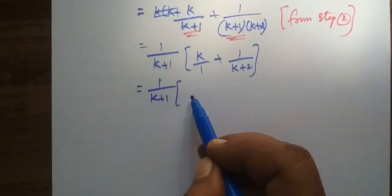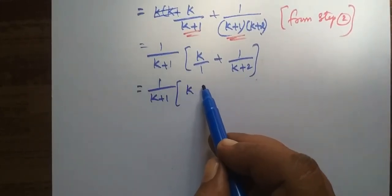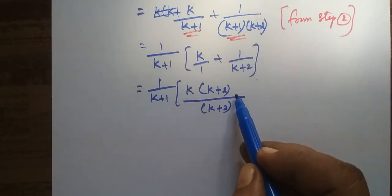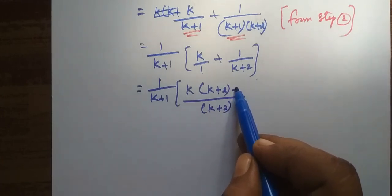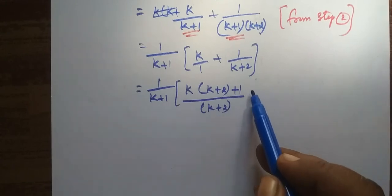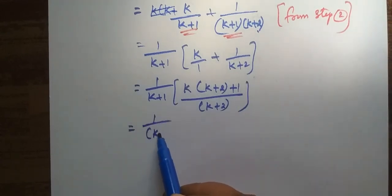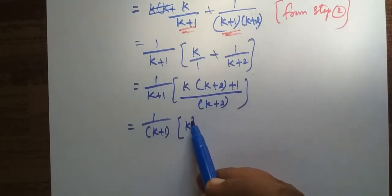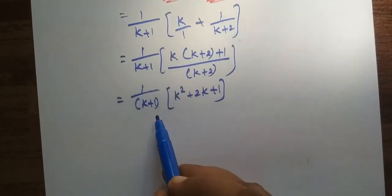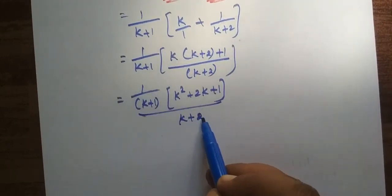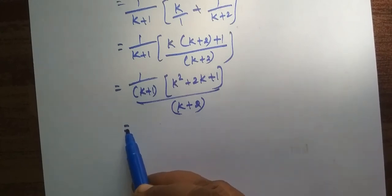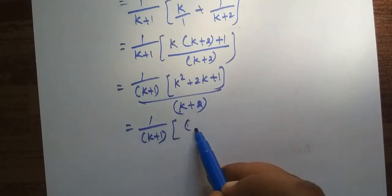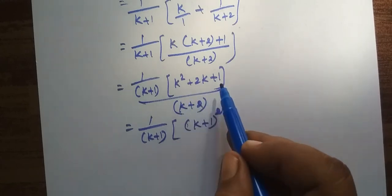The LCM step gives us plus 1. So that is equal to 1 by (k+1). K and the other one is equal to 1 by (k+1), then K squared plus 2K plus 1 by (k+2). So equal to 1 by (k+1). This is nothing but A plus B the whole square — that is the expansion.